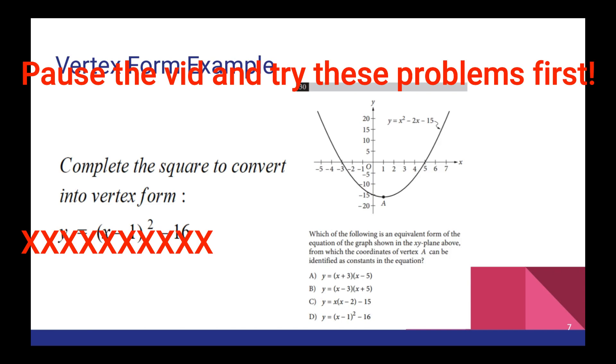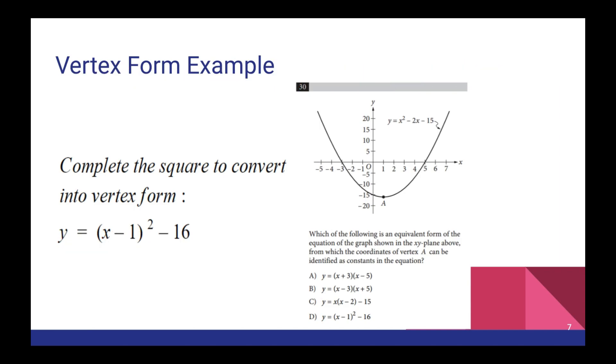Check out this example from one of the college boards practice SAT tests. So it's asking us to find the equation from which we can read off the coordinates of vertex a. They're basically dancing around the idea of put it into vertex form. So what we're going to do is we're going to take the equation given, y equals x squared minus 2x minus 15, and we're going to complete the square. That's the procedure for putting a quadratic like this into vertex form. Google that, look it up online if you're unfamiliar with it. And then it's super simple from there. Once we've completed the square we immediately see that the answer is d.